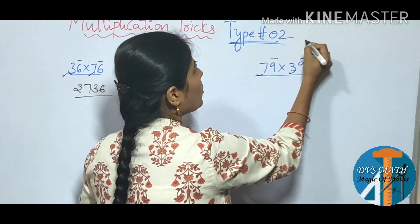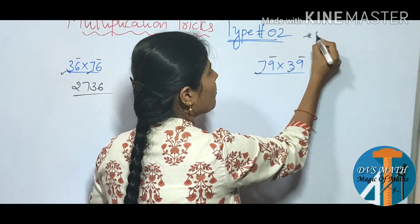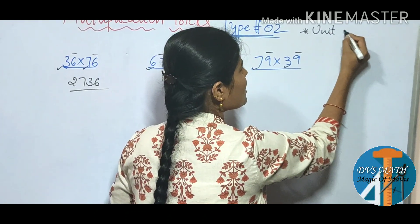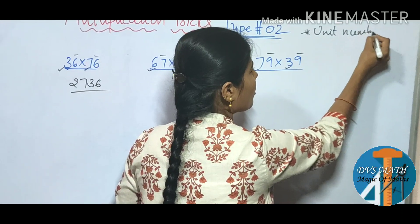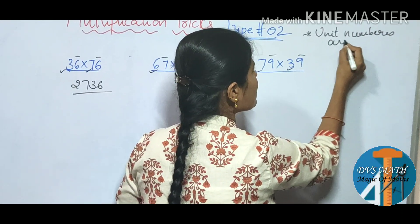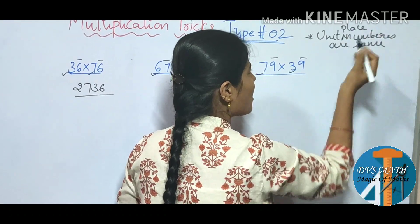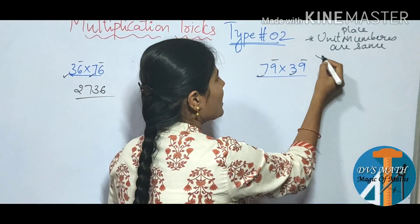So here we have these numbers. Rule number 1, rule number 1 is unit place, unit numbers are same. Unit place numbers are same.